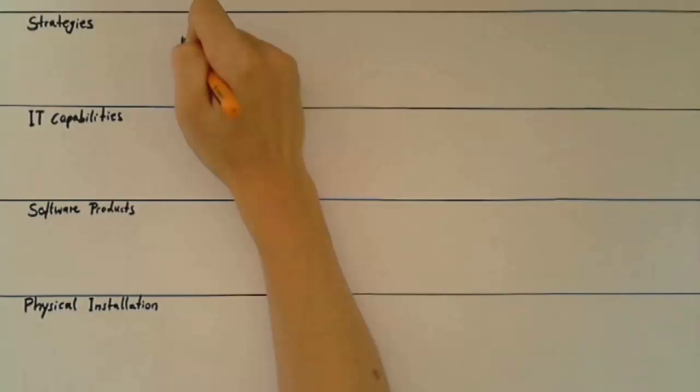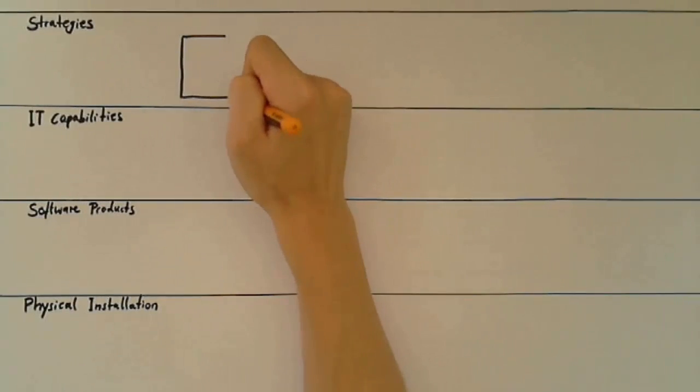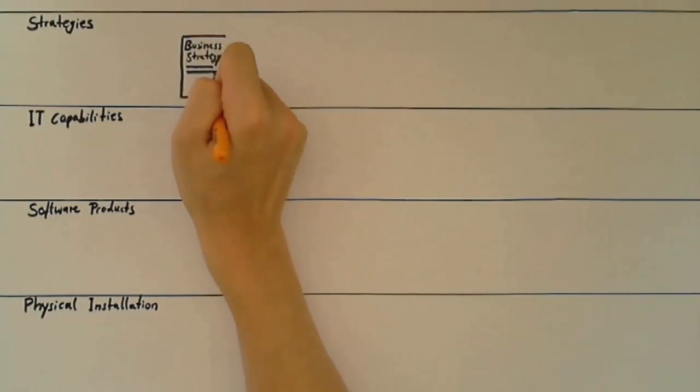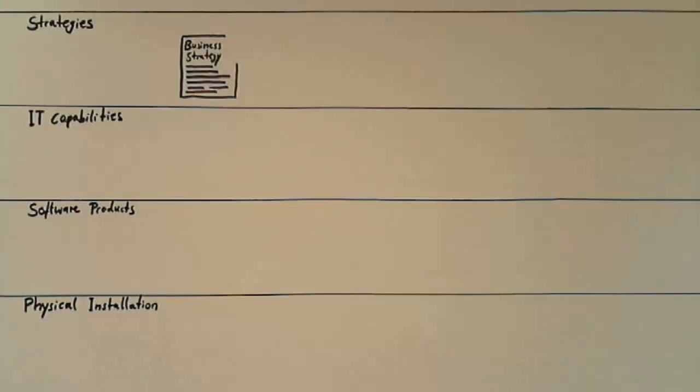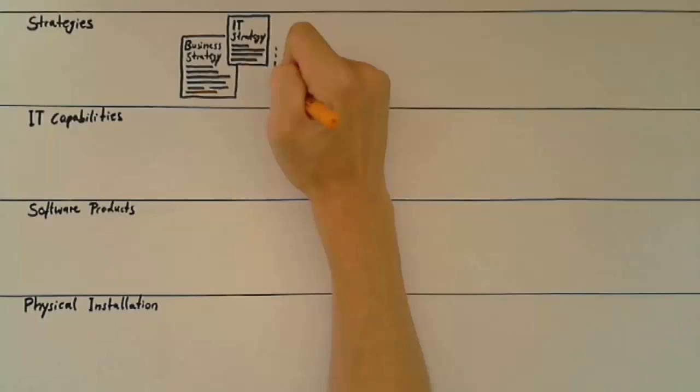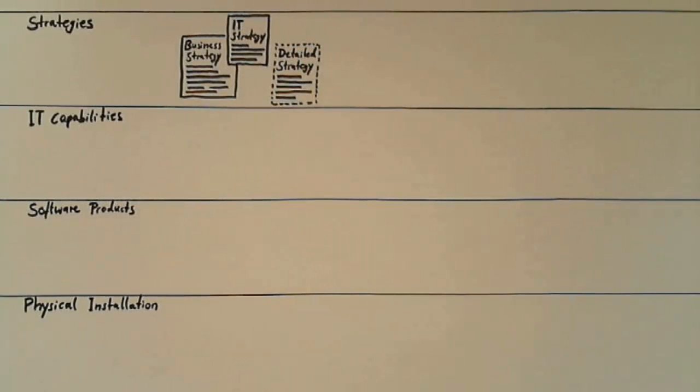The strategy level names the major strategic factors that influence the overall IT architecture. This kind of information is usually reflected in an enterprise by the business strategy and the IT strategy, or for example more detailed in a UX or security strategy depending on the specific area of interest. The emphasis of this level is to derive the IT related strategic or tactical goals relevant for the IT architecture in question.